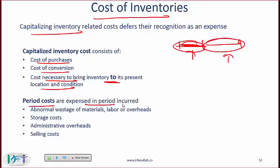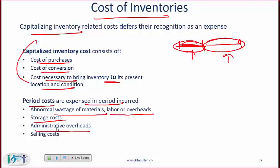Period costs are expensed in the period. If there is any wastage or scrap material, any labor or overhead associated with the wasted material needs to be expensed. Labor and overhead that directly go into the inventory that will be sold are capitalized. Storage costs once inventory is in the warehouse are expensed, as are administrative or security costs for that warehouse, and any selling costs.